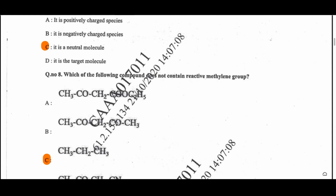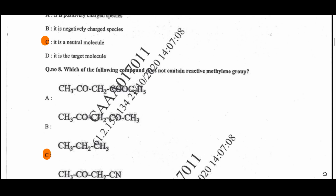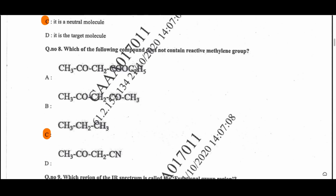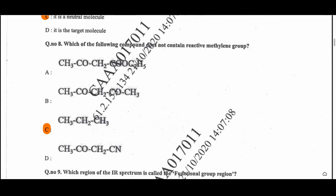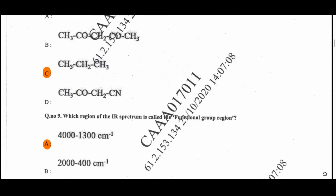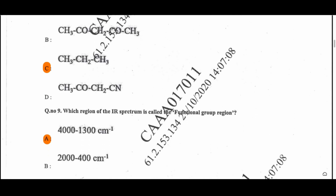Question 8: Which of the following compounds does not contain a reactive methylene group? The methylene group flanked between two electron-withdrawing groups like carbonyl groups is known as a reactive methylene group. In option C, there is no such condition, so option C has no reactive methylene group. All others have reactive methylene groups.